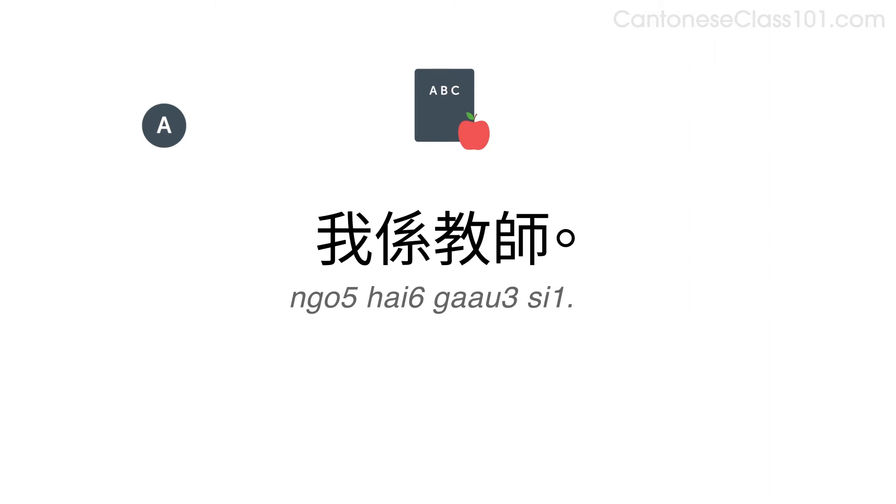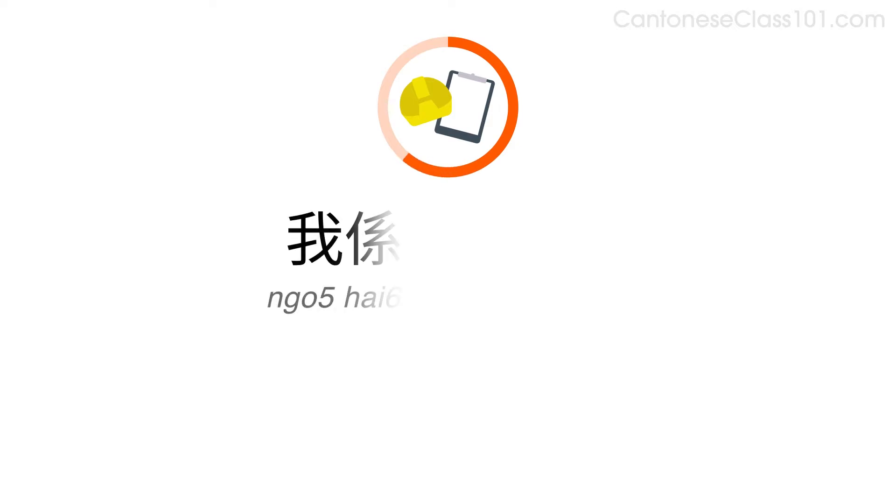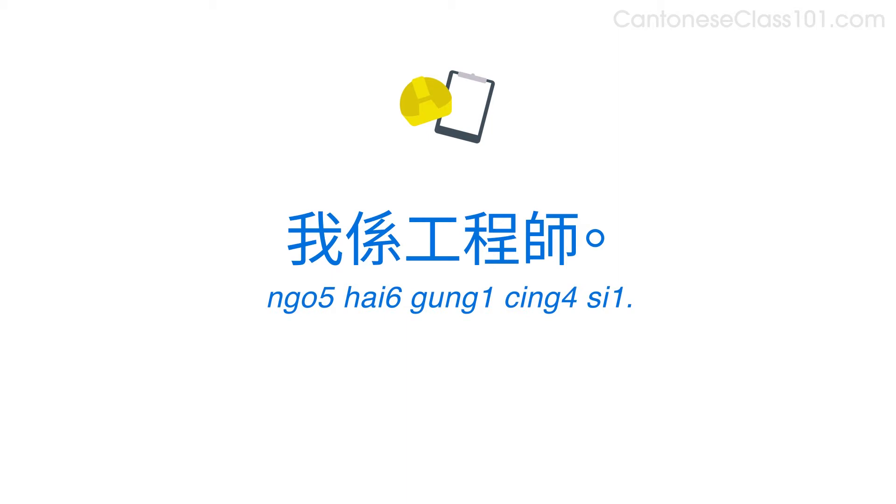Now, imagine you're an engineer. Do you remember how to say, engineer? 工程師. Say, I'm an engineer. 我係工程師. Now, answer the question saying that you are an engineer. 你係做咩嘅? 我係工程師. Well done.